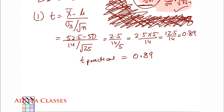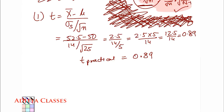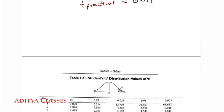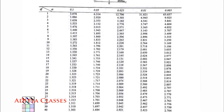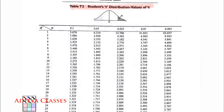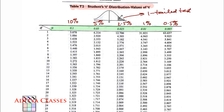Now we need to find T theoretical, so let us import the T-table. This is the Student's t-distribution table. We see columns for alpha: 0.1, 0.05, 0.025, 0.01, and 0.005 — corresponding to level of significance 10%, 5%, 2.5%, 1%, and 0.5%. These are for a one-tailed test. If you are using a two-tailed test at 5%, each tail contains 2.5%.